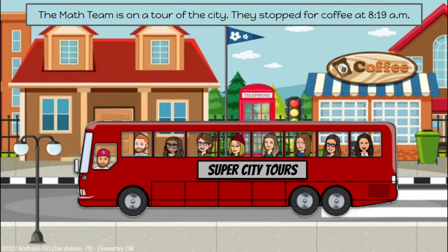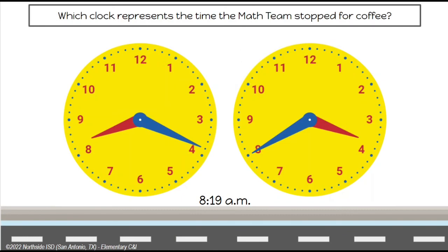In this lesson, students will review reading time in one-minute increments and AM and PM. Read the first scenario and ask students to identify which clock represents the correct time. Lead a class discussion on the differences between the clocks shown. The math team stopped for coffee at 8:19 AM. Which clock represents this time? The clock on the left shows 8:19 because the hour hand is between the 8 and the 9, so the time begins with 8, and the minute hand is pointing to 19 minutes past the hour. The clock on the right shows 3:40 because the hour hand is between the 3 and the 4, and the minute hand is pointing to the 8, which represents 40 minutes past the hour of 3.